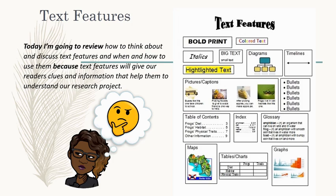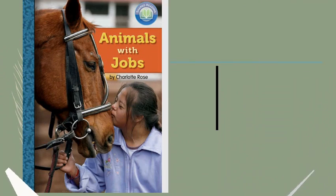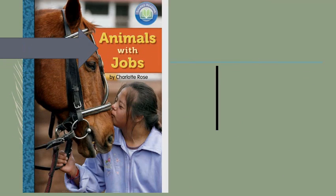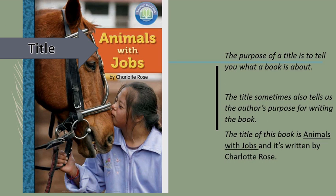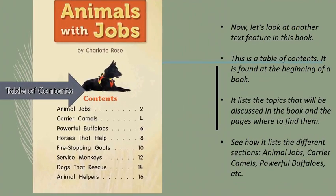Title: the purpose of the title is to tell what a book is about. The title sometimes also tells us the author's purpose for writing the book. The title of this book is Animals with Jobs and it's written by Charlotte Rose.